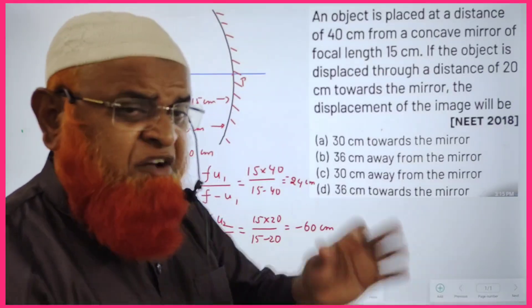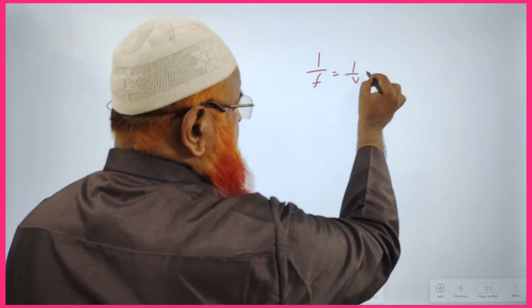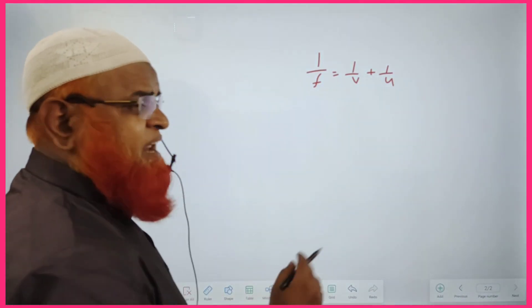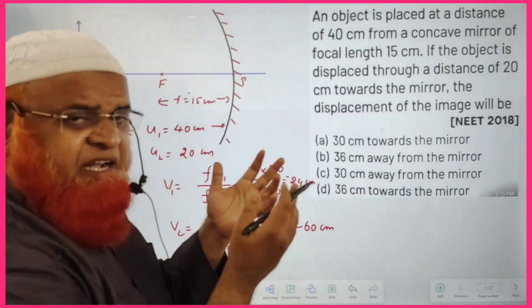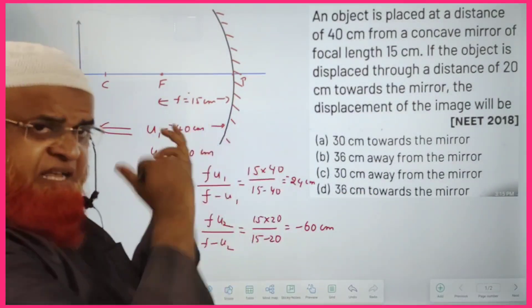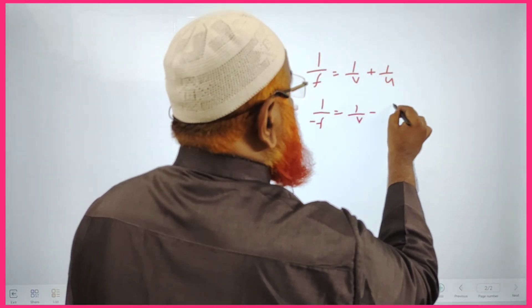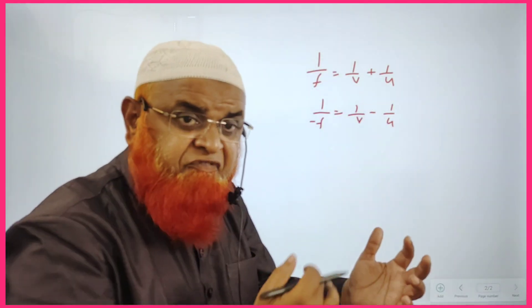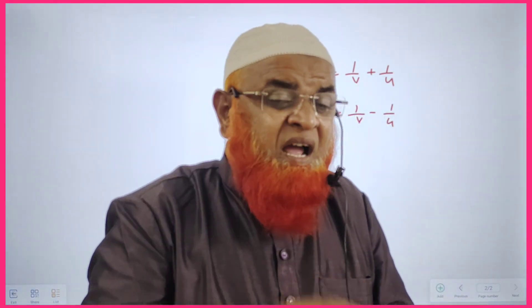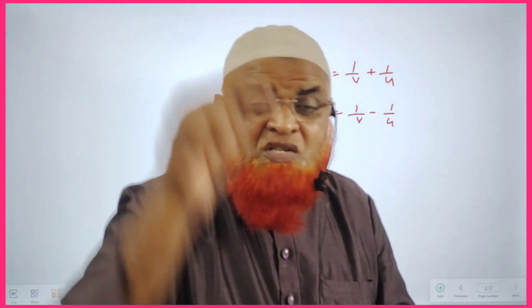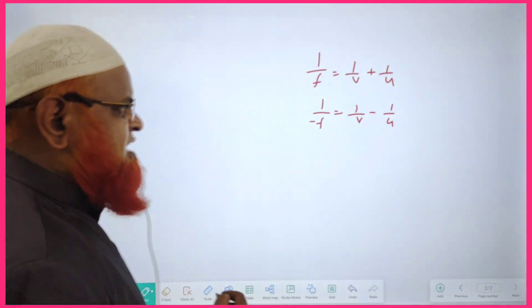We need to find the value of that shift. You should remember the mirror formula: 1/v + 1/u = 1/f. For a concave mirror, focal length is on the left side, so it is taken as negative. The object is also placed on the left side, so it is also taken as negative. For image distance, you should not assume a sign convention — the answer will tell you the sign.